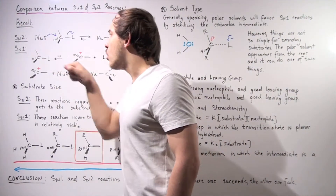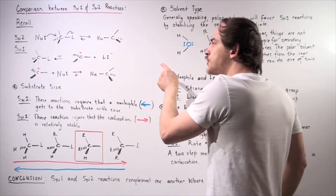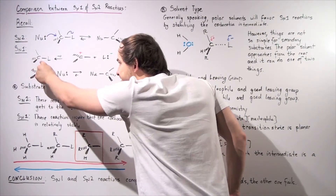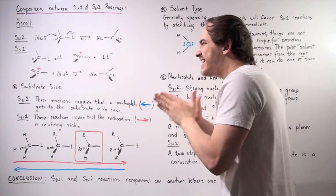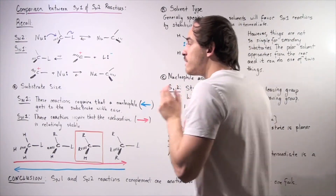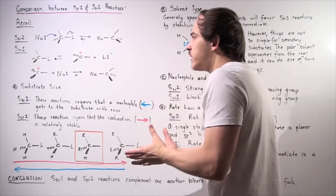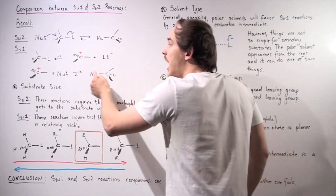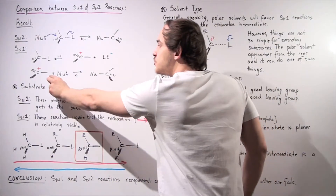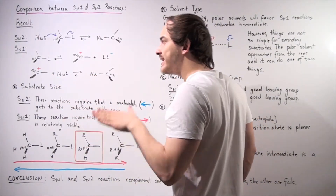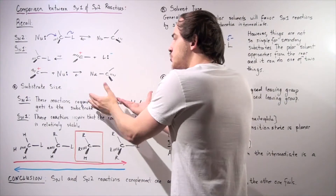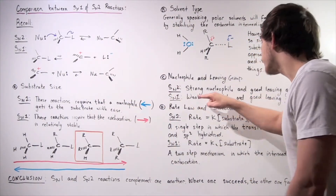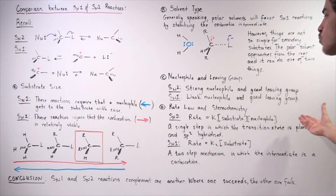In SN1 reactions, the first step is the rate-determining step — the ionization step — in which the leaving group detaches. So we really need a good leaving group for SN1 reactions. The nucleophile doesn't matter as much for the rate, because it is the product-determining step — it influences the structure of the product, not the rate. For SN1 reactions, weak nucleophiles and good leaving groups are favored.